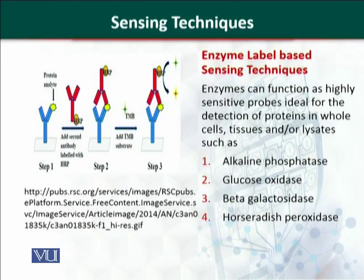A third important type of labeling technique is the use of different enzymes. Various enzymes are used to label the target molecule, for example, alkaline phosphatase, glucose oxidase, beta-galactosidase, and horseradish peroxidase. In all these enzyme-based methods, we use a chromogenic substrate.